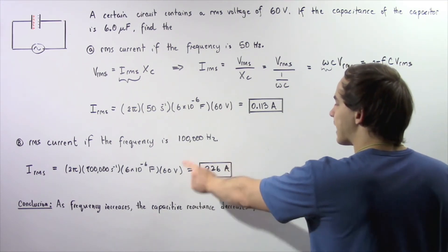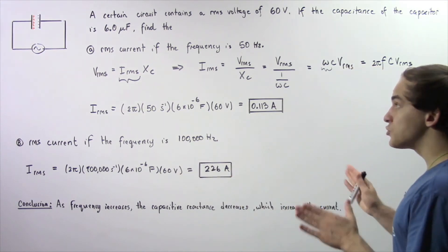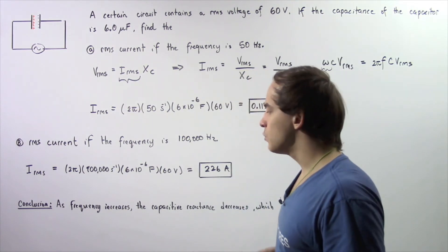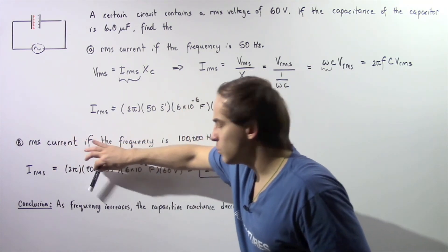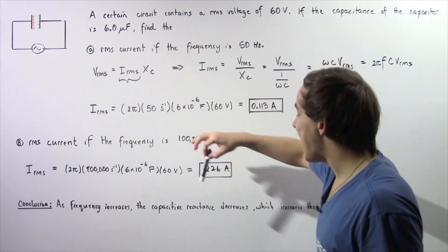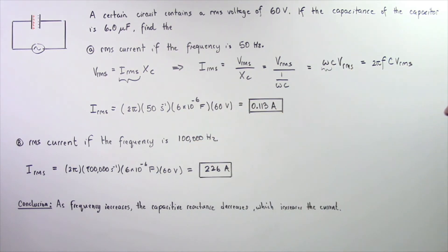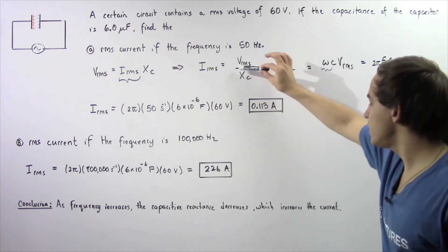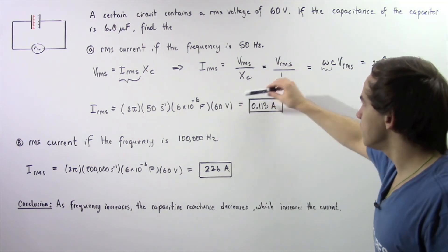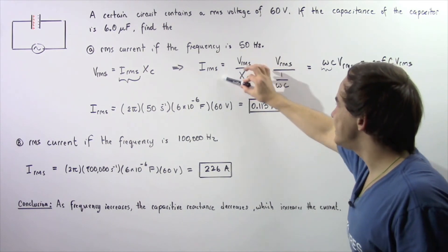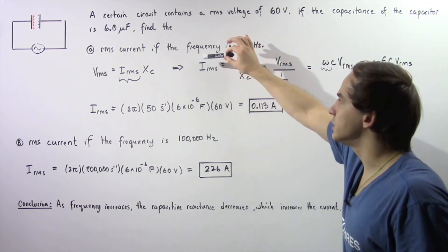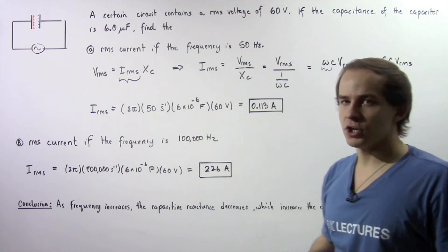Notice what happens to our current when we increase the frequency: as frequency increases, the capacitive reactance decreases, and that in turn increases our electric current. By increasing the frequency, we decrease the reactance and increase our root mean square electric current.